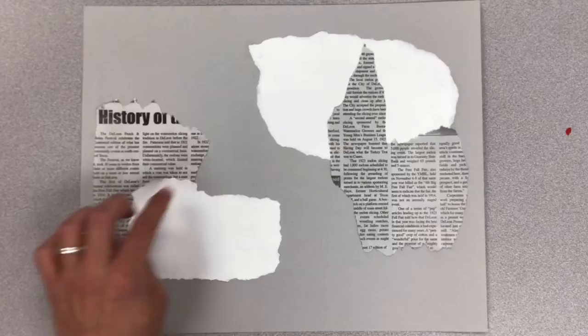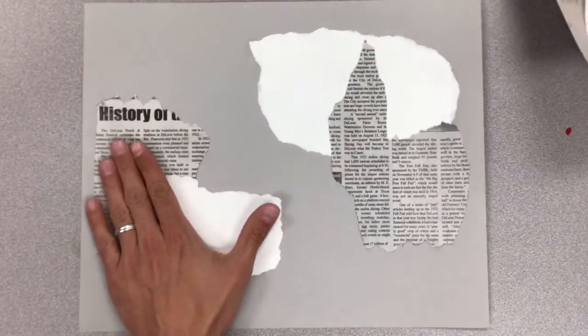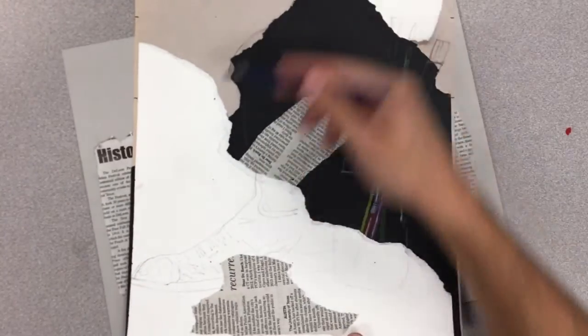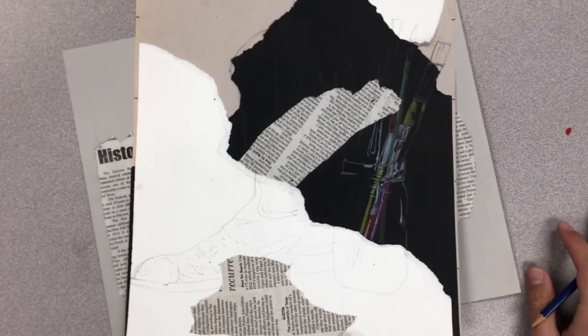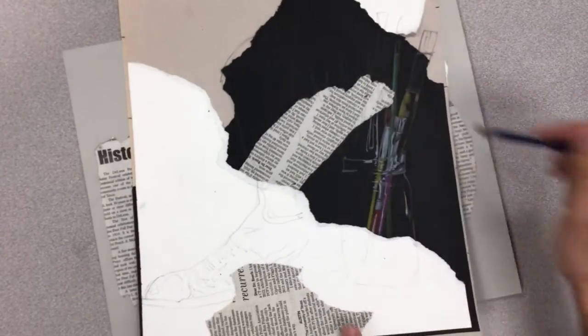Once we get our papers onto our gray paper and they're glued down, we are going to be making a grid onto all of the different papers so that we can draw it out.